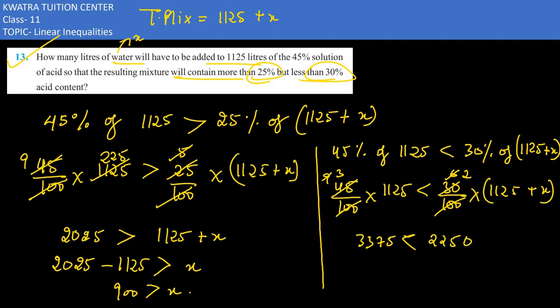1125 would be multiplied with 2. So that's 2250. And we'll multiply x with 2. Subtract from 3375. That would be 1125 less than 2x. So I would get the whole equation divided by 2. So I would have 562.5 less than x.